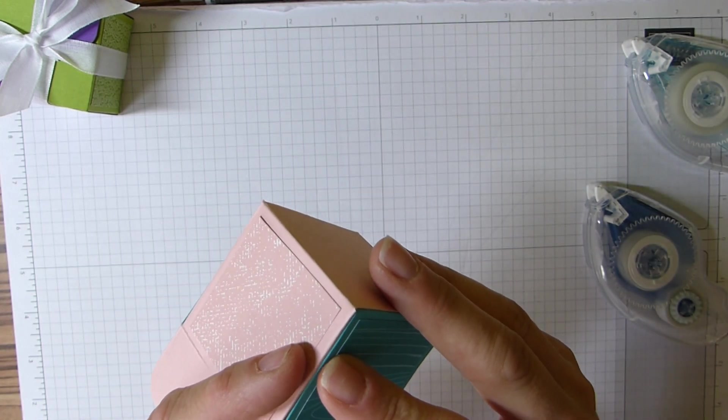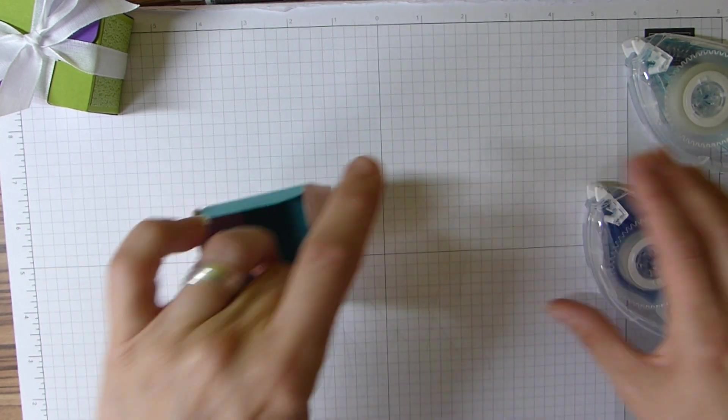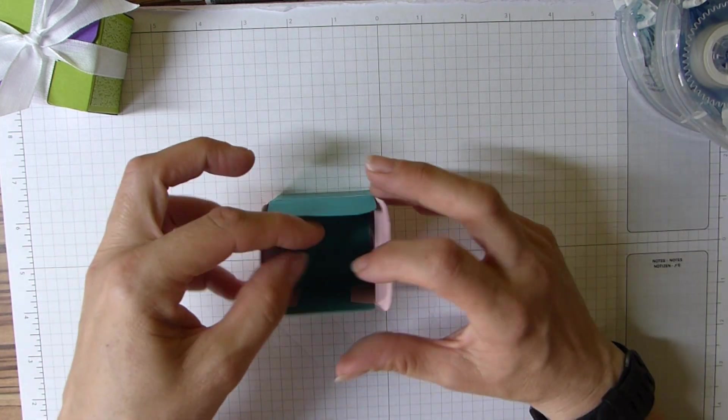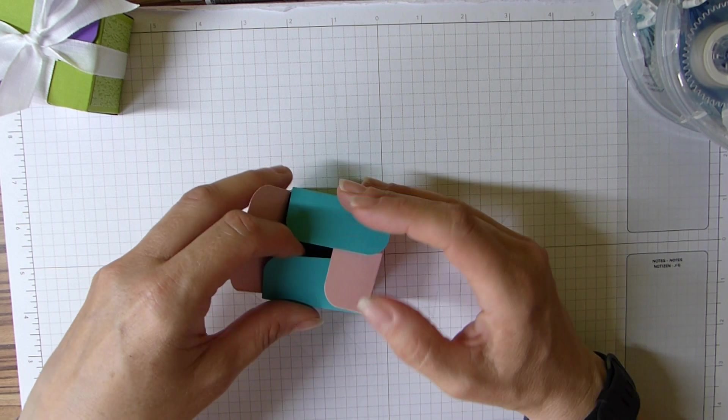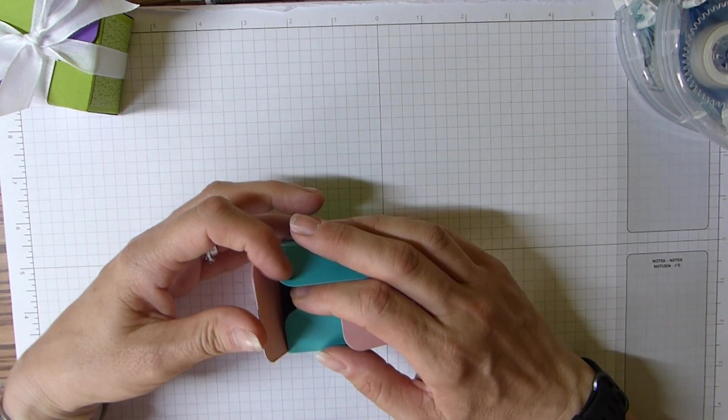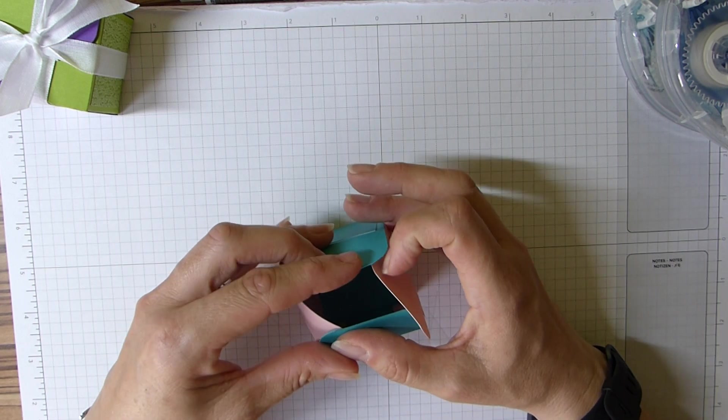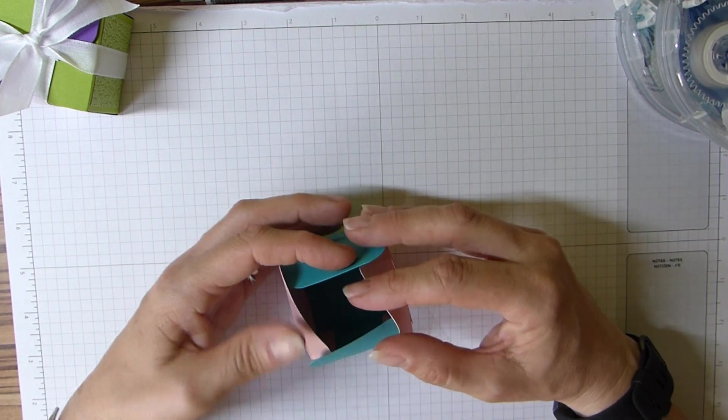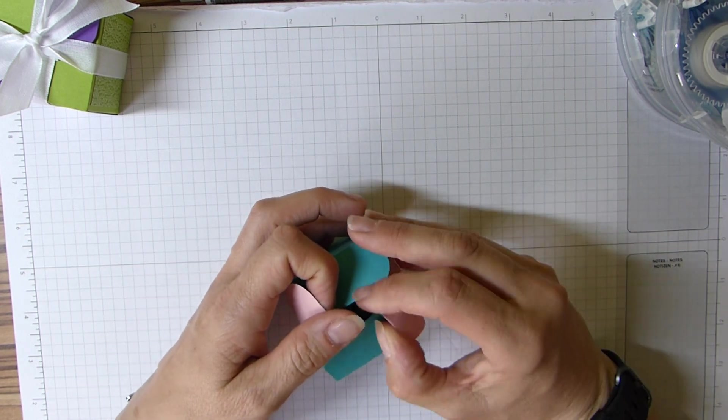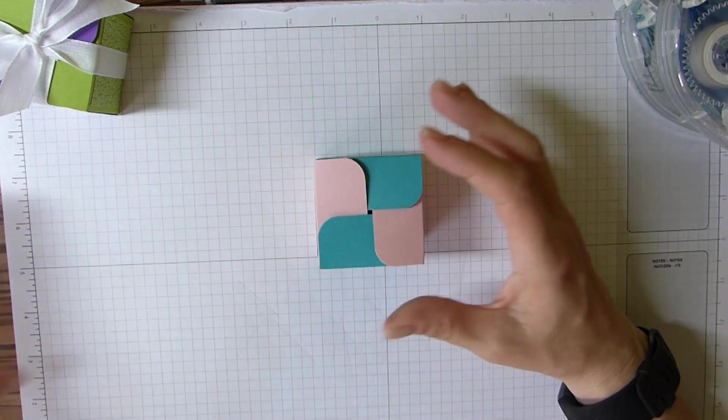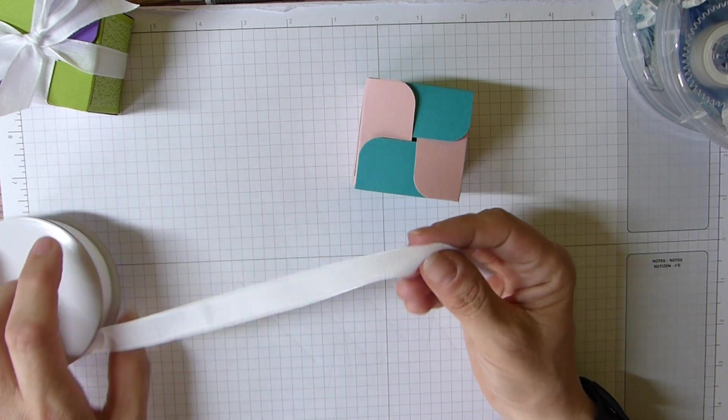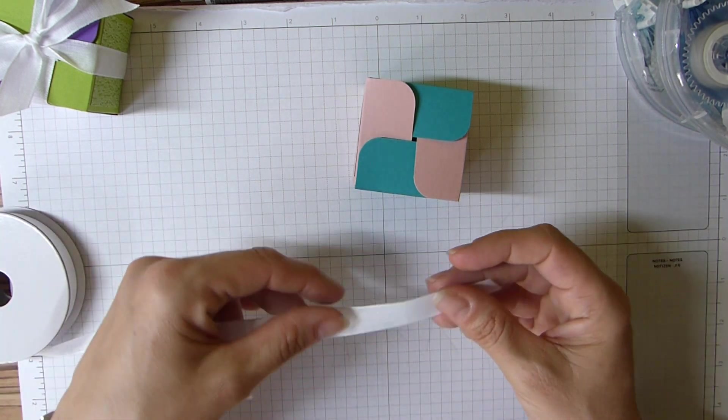And then the last one. To close the top up, I've just put them down alternately and then we need to just tuck this pink one just underneath. There we go. So it's like that, and then I've used some of the Flowers for Every Season ribbon.